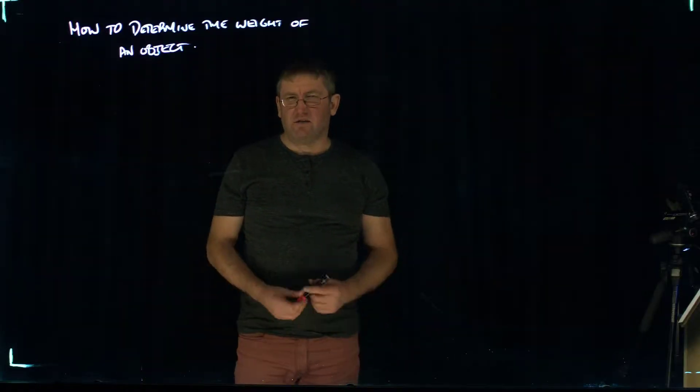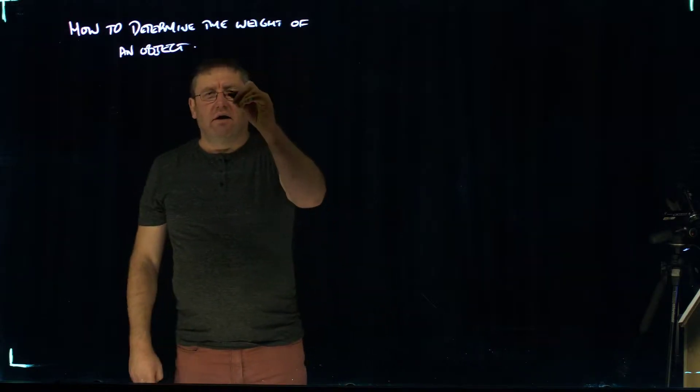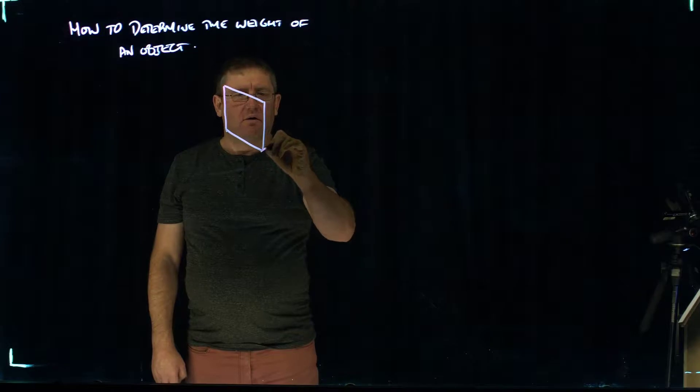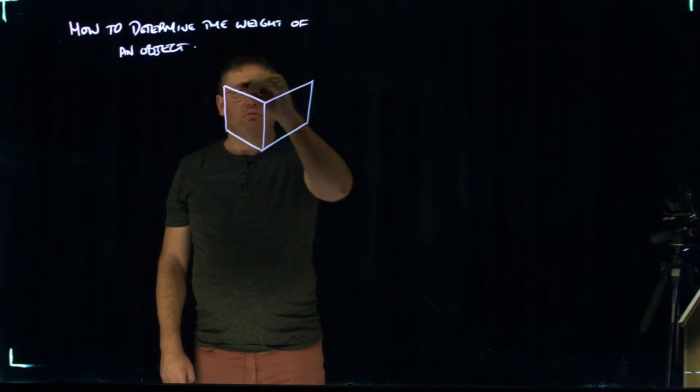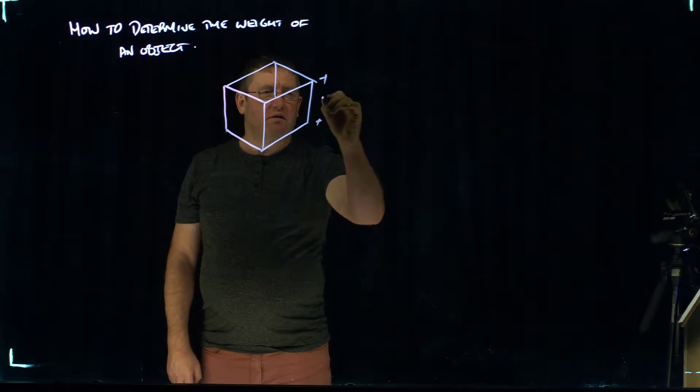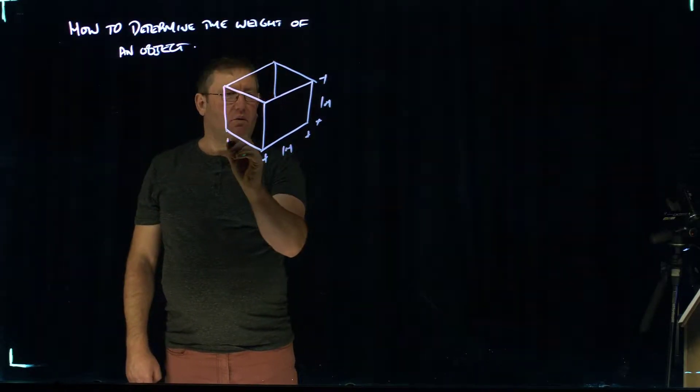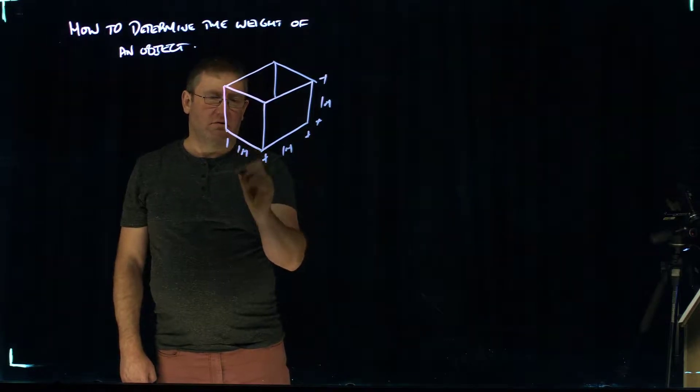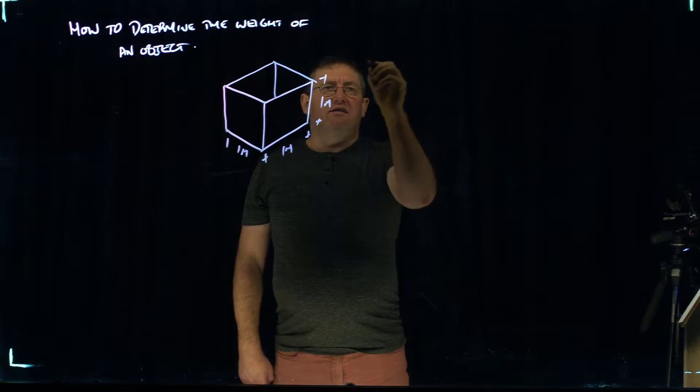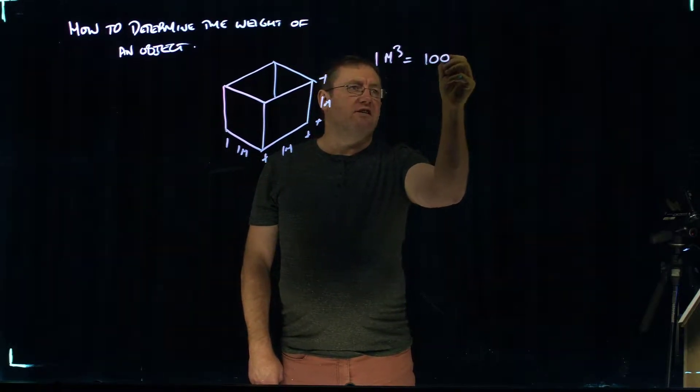Right, so this video is on how to determine the weight of an object. You'll remember when we have a cube that is 1 meter cubic in capacity, so it's 1 meter by 1 meter by 1 meter. That has, in that meter cubed, it equals 1,000 liters.